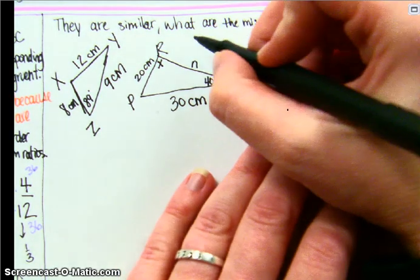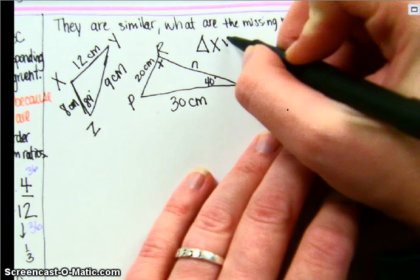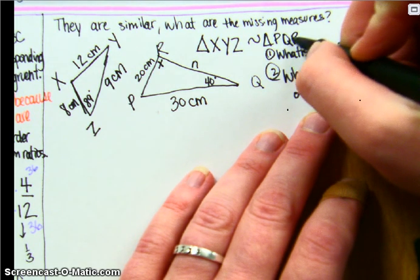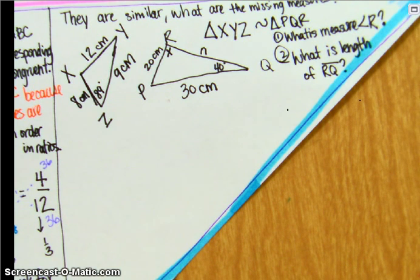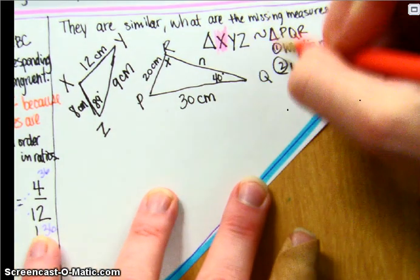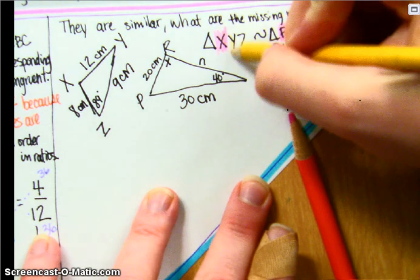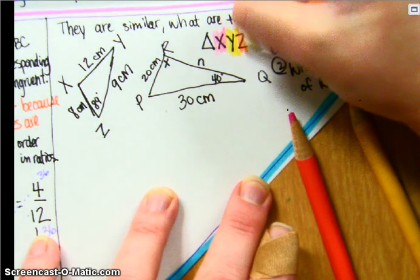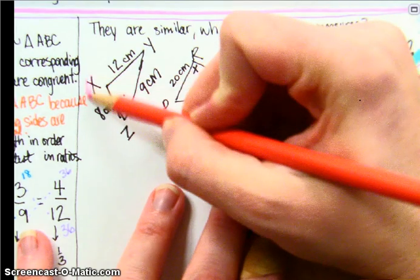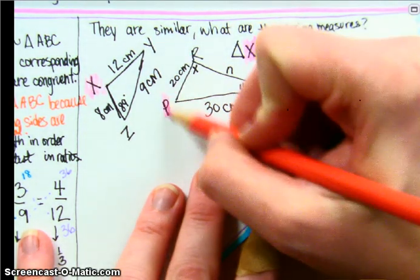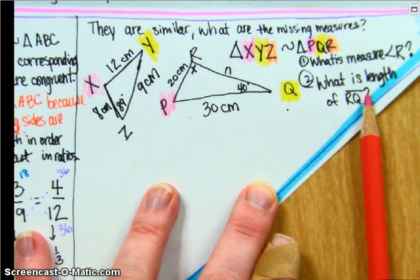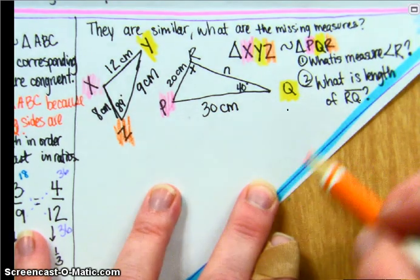Our similarity statement is given to us in the directions, and it says that triangle XYZ is similar to triangle PQR. And this is where using colors will be beneficial. So X is in first place, P is in first place, Y is in first place, Q is in second place, second place, and Z third place, R is in third place. So if I go over here, X is corresponding to P, and Y is corresponding to Q. And then Z corresponds to R.